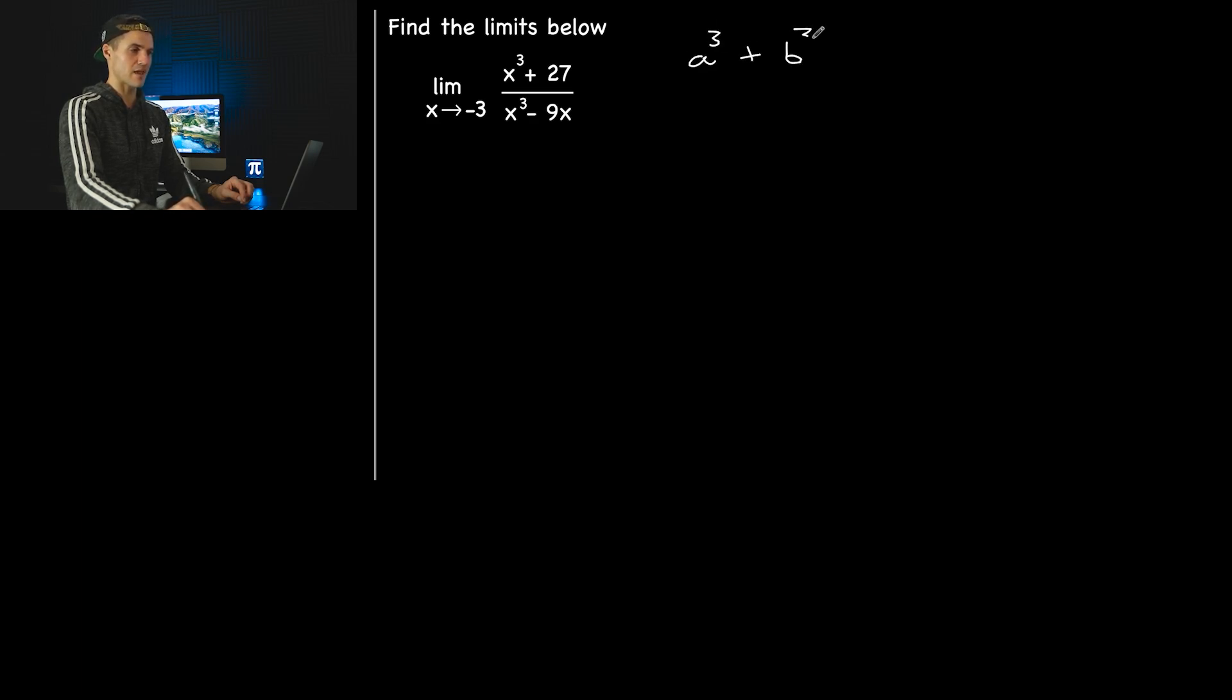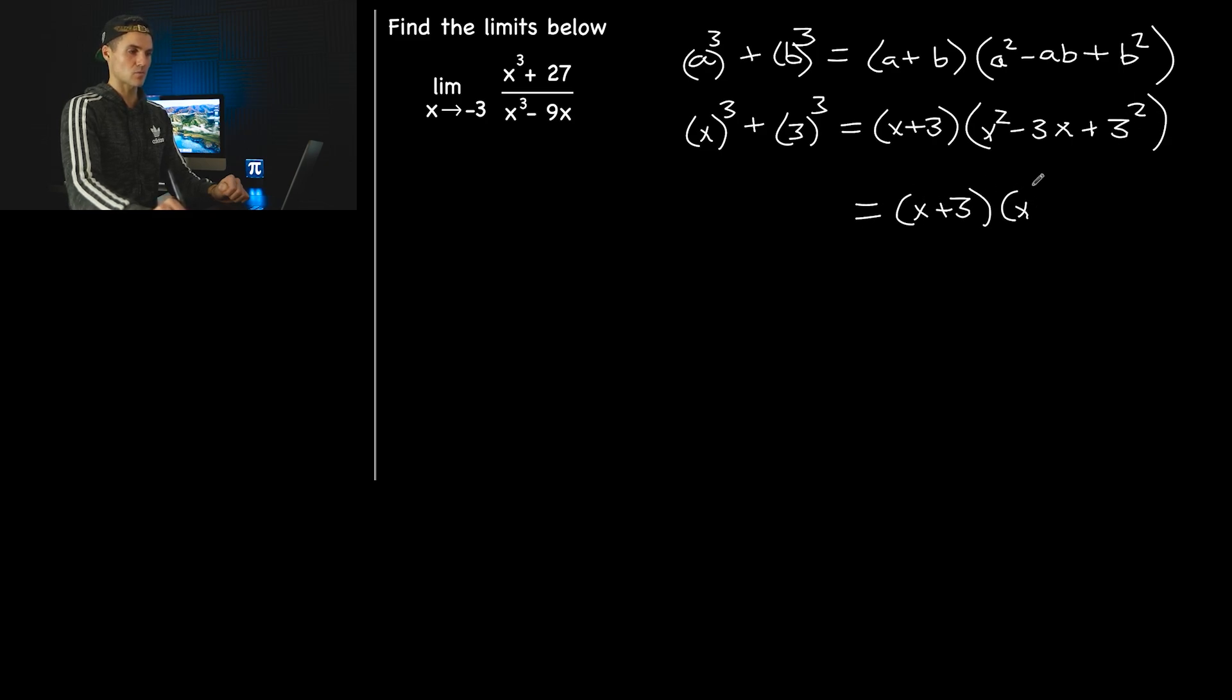Notice that the numerator here, this x cubed plus 27, that's actually a sum of cubes. If you remember a sum of cubes, if we have a cubed plus b cubed, the formula is a plus b, a squared minus ab plus b squared. So let's write this x cubed plus this 27 as 3 cubed. That's going to be x plus 3, then x squared minus 3 times x plus 3 squared. So it's equal to x plus 3, x squared minus 3x plus 9. That's what the numerator is going to factor into.